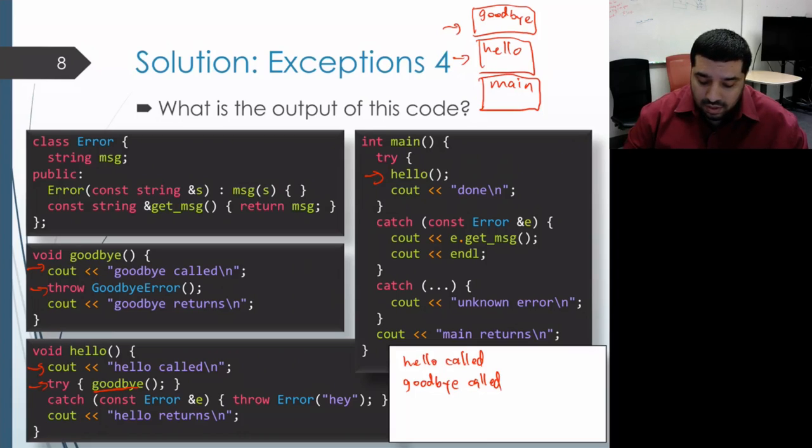And in this case, there's only one catch block and it cannot handle a goodbye error. It just handles the error type. So this try catch can't handle a goodbye error.